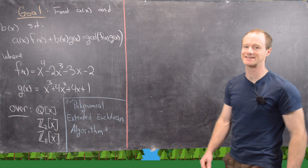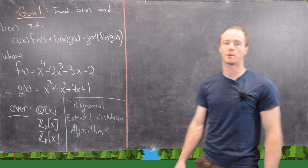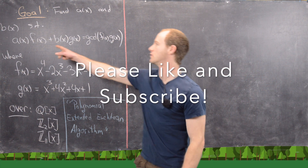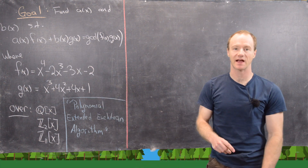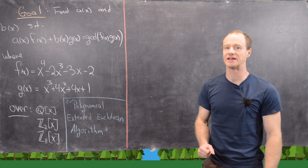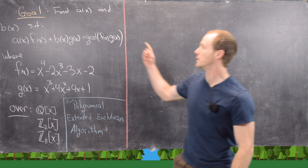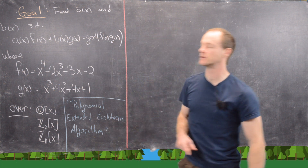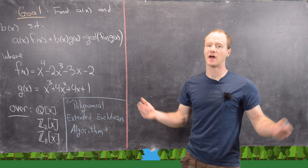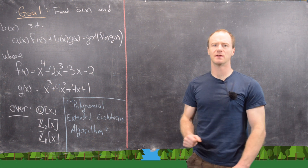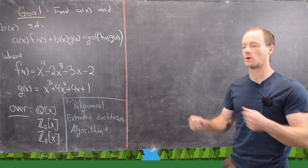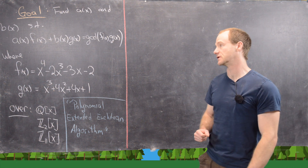In this video we're going to look at a version of the extended Euclidean algorithm for polynomials. Recall that if we have two polynomials f and g of x inside a polynomial ring over a field, like k adjoined x, then we can always take a combination of those two polynomials to achieve their greatest common divisor. We proved that earlier after precisely defining the GCD of two polynomials.